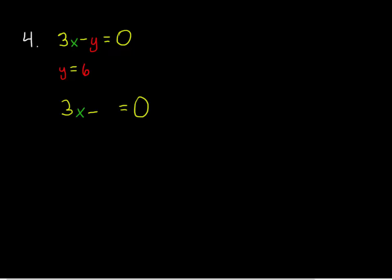When we use the strategy of substitution, we change out things that are the same. Since y is equal to 6, and there's a y in one of my equations, instead of writing 3x minus y, I can write 3x minus 6, and then go about solving that equation for x.